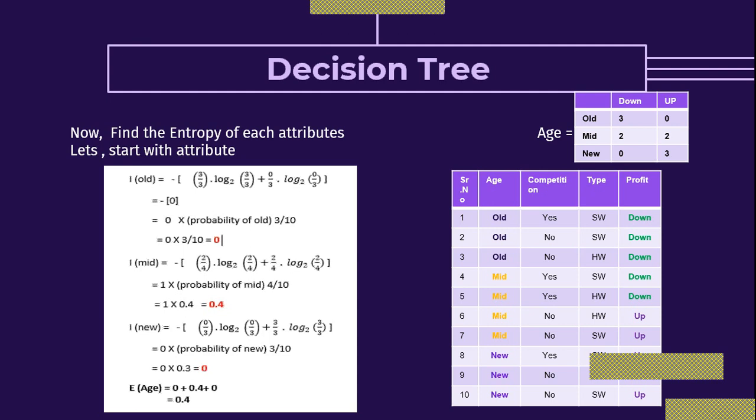In the age attribute there are three different values: old, mid, and new. In association with the target attribute we track down and up values. For old: all three old records match with down — so old has 3 down and 0 up. For mid: there are 2 down and 2 up. For new: there are 0 down and 3 up.